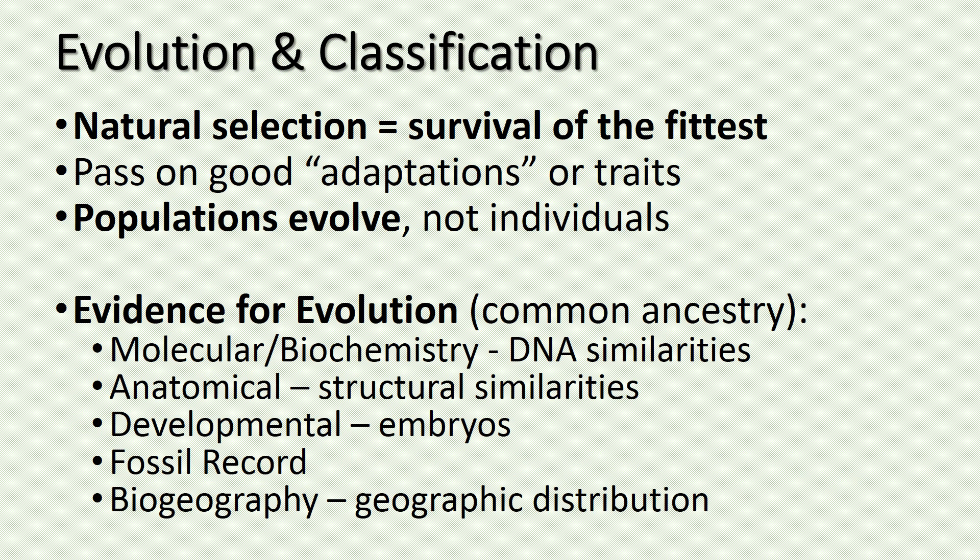Evolution is the change in organisms over time. This is caused by natural selection, which is survival of the fittest. The most fit, with the best adaptations or traits, will survive and then reproduce. Remember, populations evolve, not individuals. The evidence for evolution, or common ancestry, can be found in one of five ways: through DNA similarities (molecular or biochemistry evidence), structural similarities (anatomical evidence), through embryology or embryos (developmental evidence), from the fossil record (which shows the progression of organisms from ancient times to the most recent), and then the geographic distribution of organisms, which refers to biogeography.